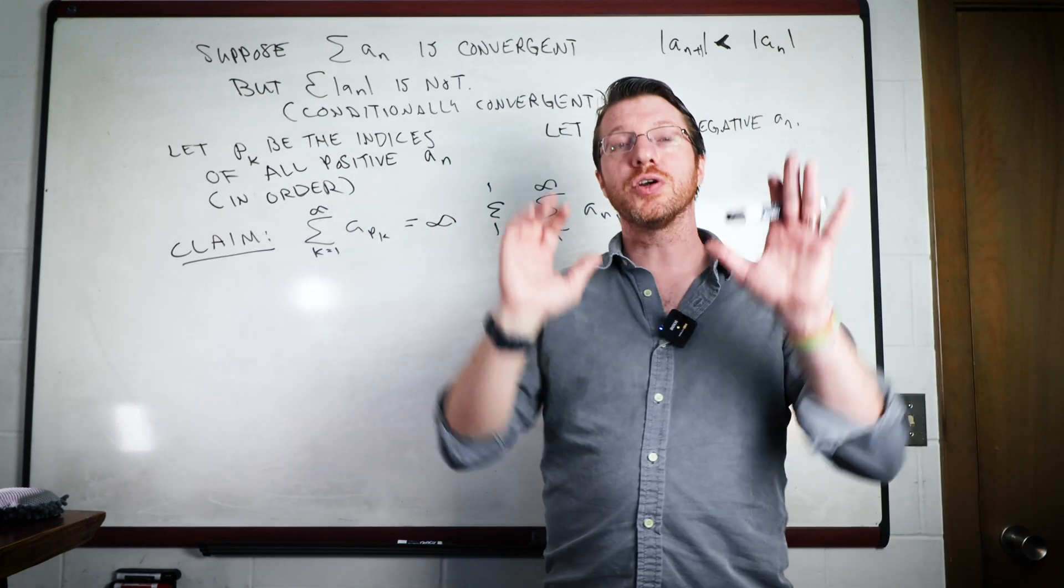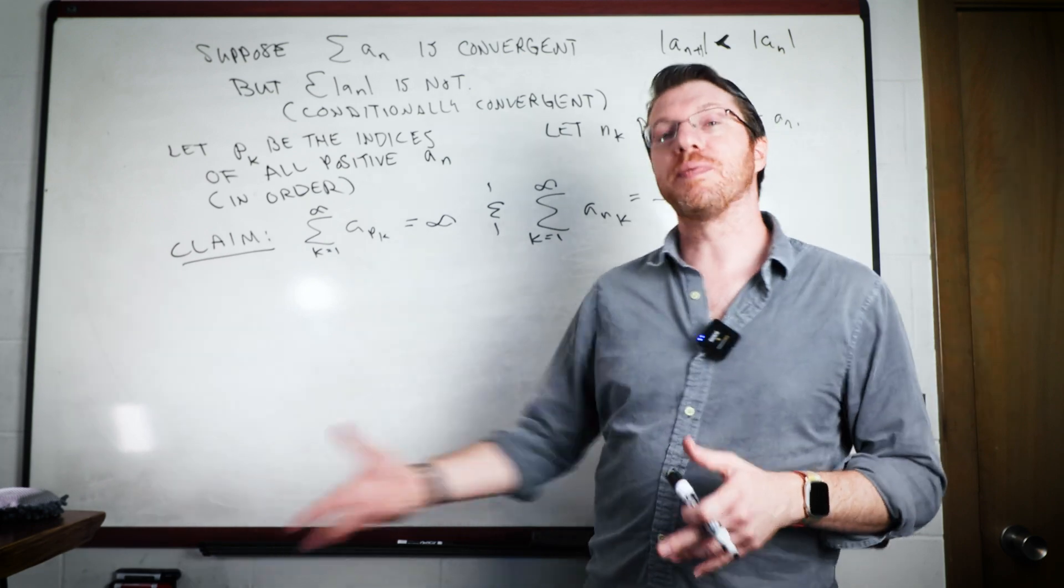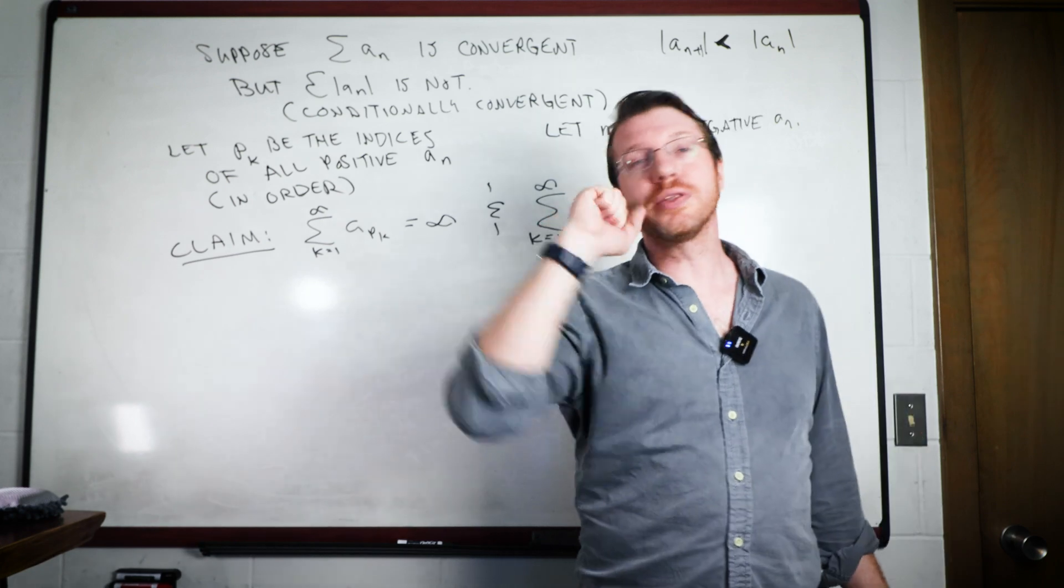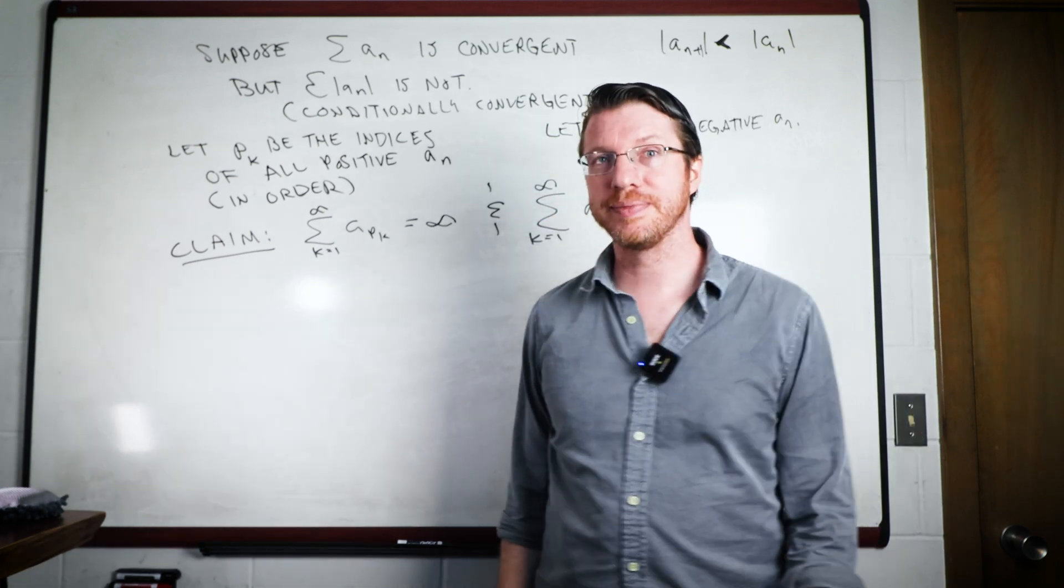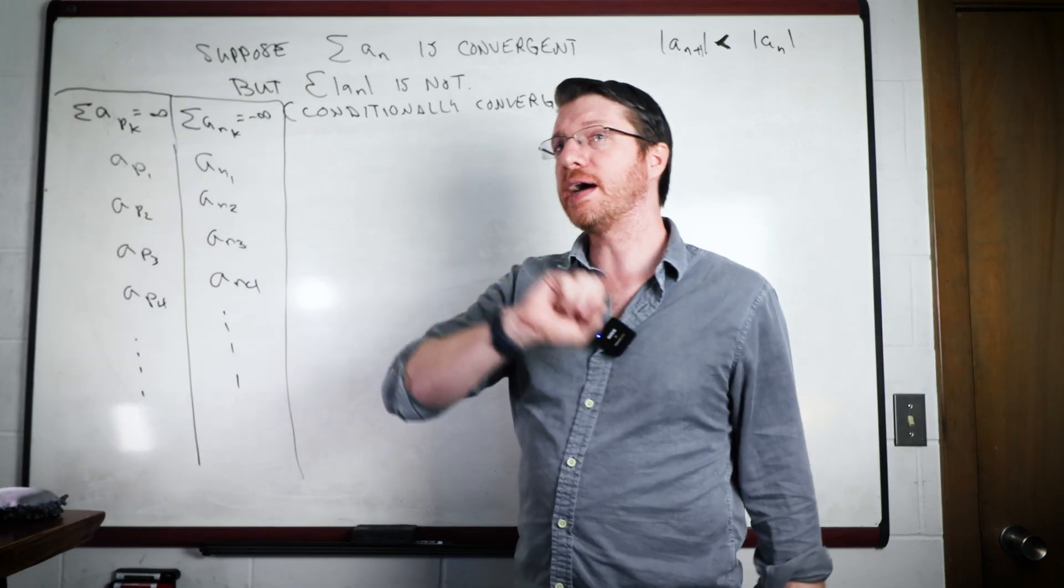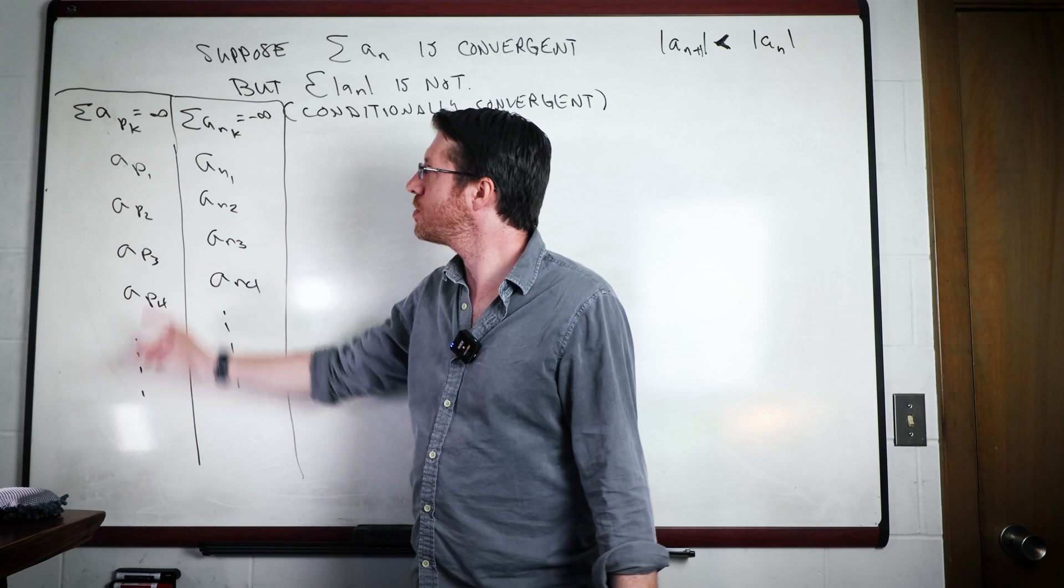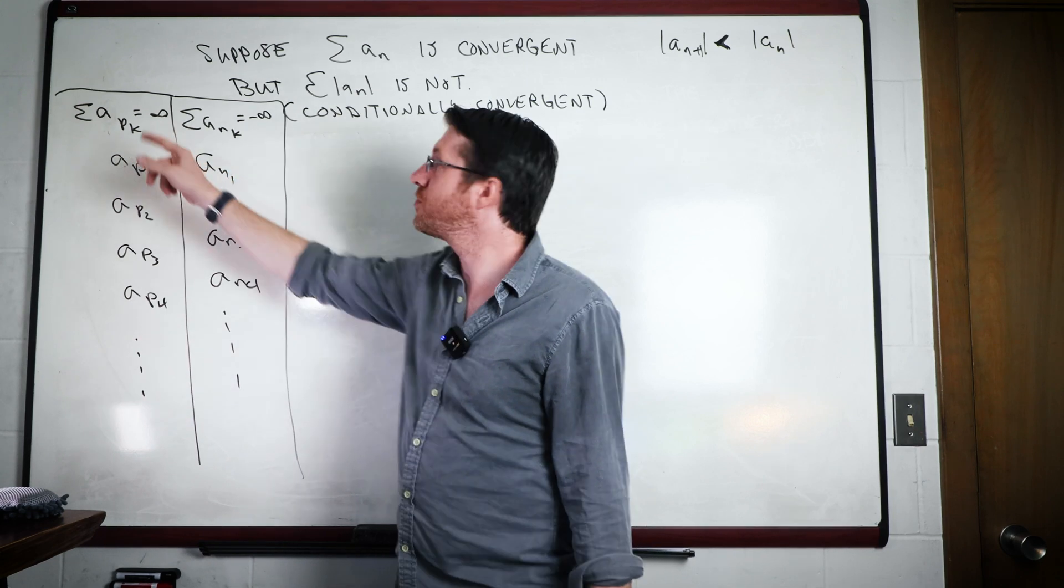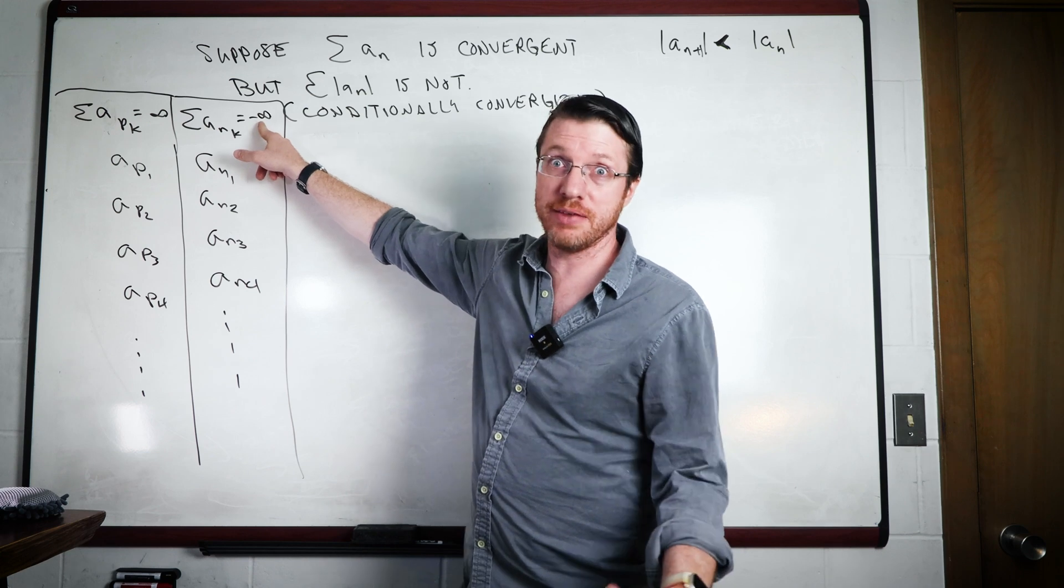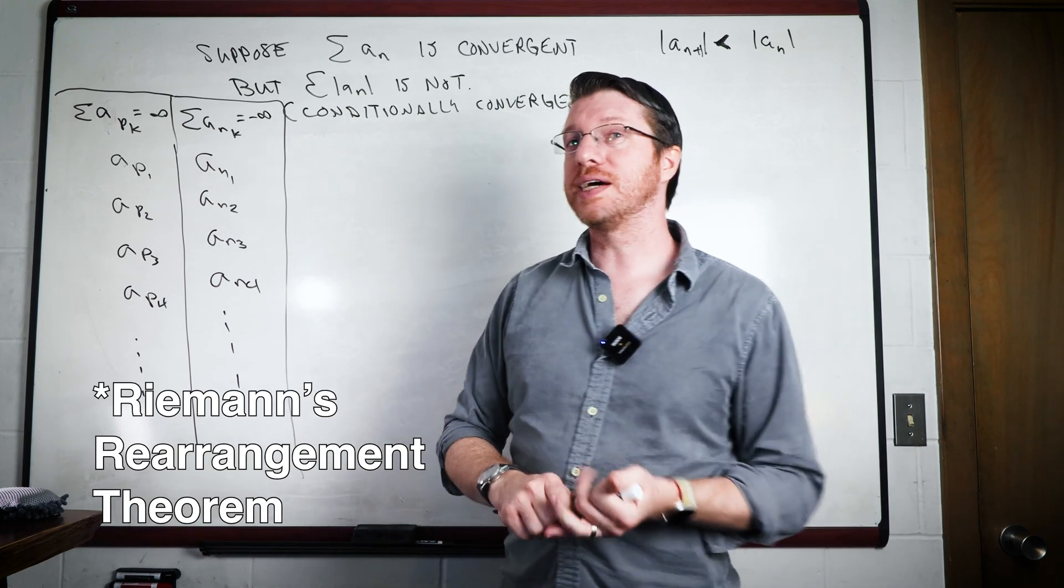Okay, so now we have our two infinite reservoirs, one going to positive infinity and one going to minus infinity. And so now let's go ahead and put it together to get what is called the Riemann Rearrangement Theorem. So what we have is we have these two reservoirs. These are all of our positive terms, we know they add up to positive infinity. And we know that these are all of our negative terms, they add up to negative infinity.